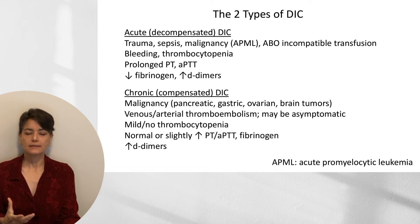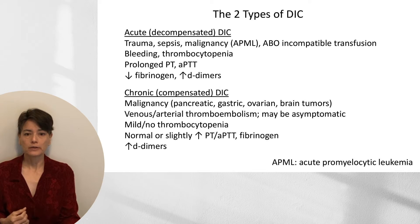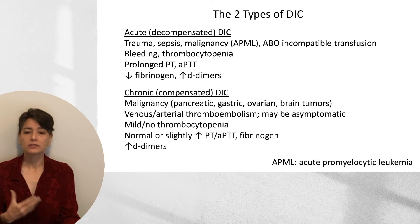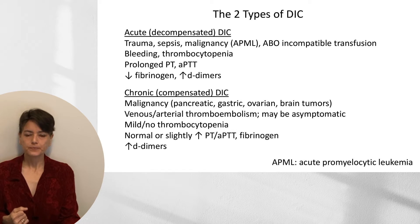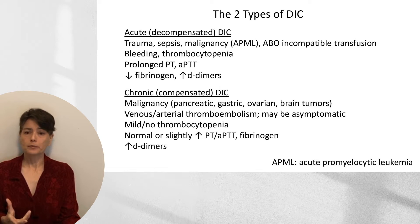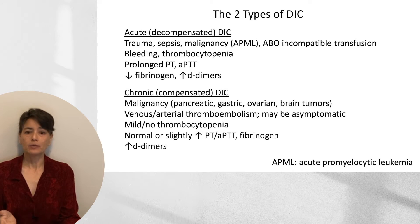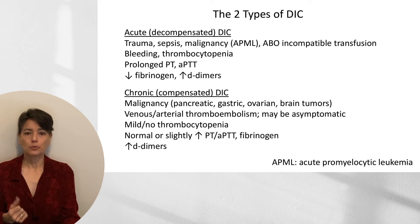By contrast, chronic DIC typically arises in the setting of a malignancy, such as the adenocarcinomas mentioned earlier. Patients may be asymptomatic, detectable only through atypical laboratory tests, or they can present with venous or arterial thromboembolism. Their lab tests show mild to no thrombocytopenia and normal or slightly elevated PT, APTT, and fibrinogen, with increased D-dimers — the unifying factor across both types.